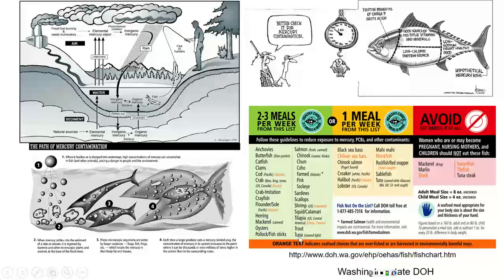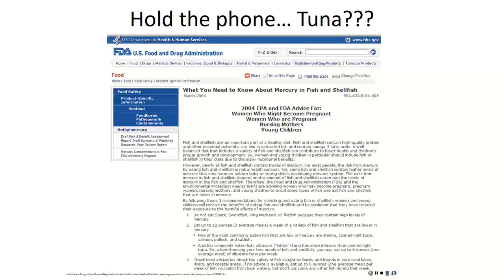Canned light tuna hits in the green category — it's fine. It's just the white albacore tuna or the tuna steak that you really want to avoid. There's also information from the FDA about tuna — especially the tuna steak or albacore tuna — in the avoid category.